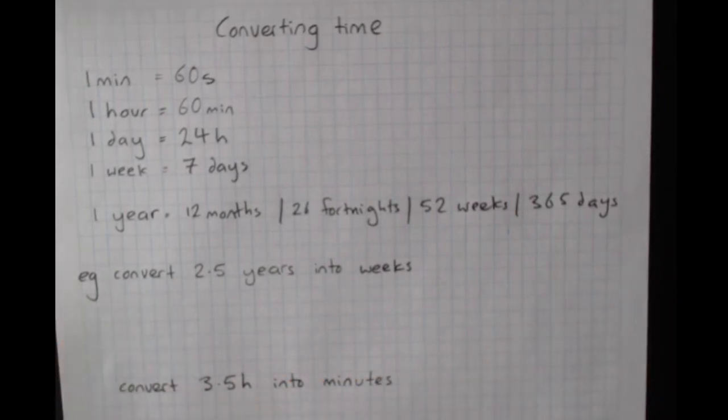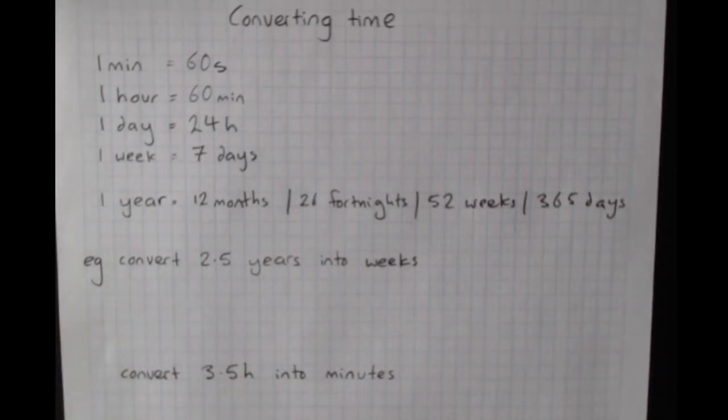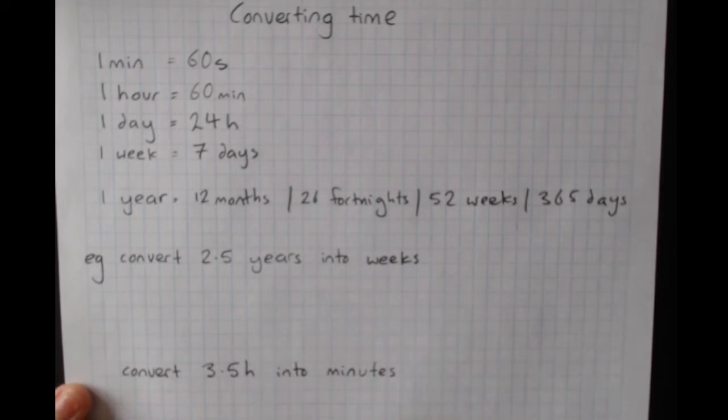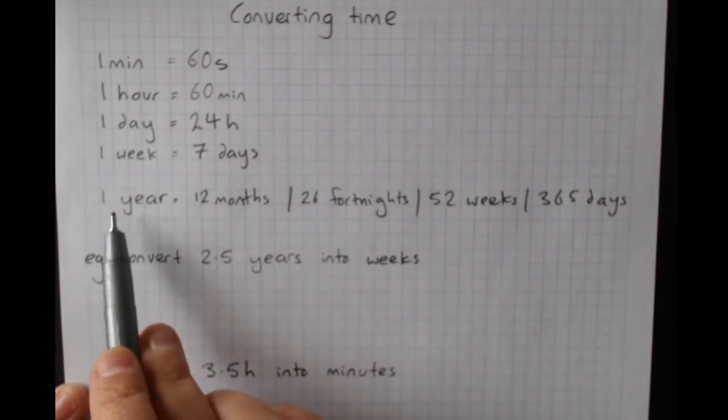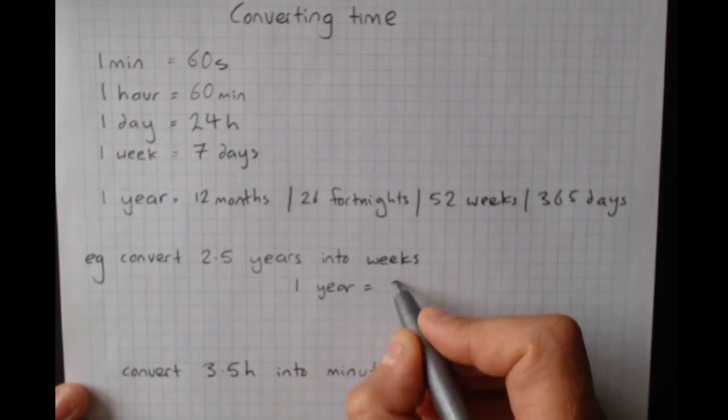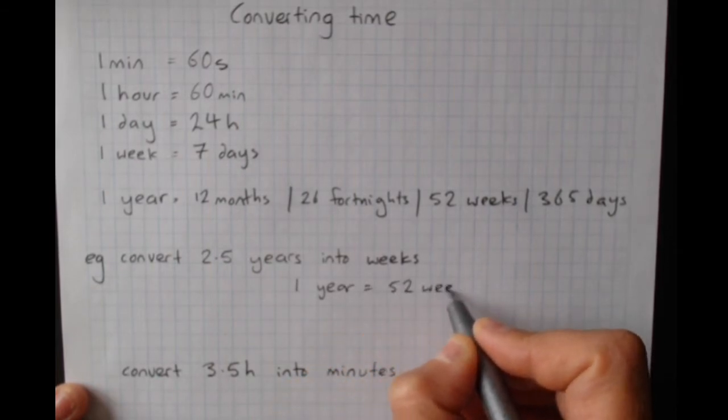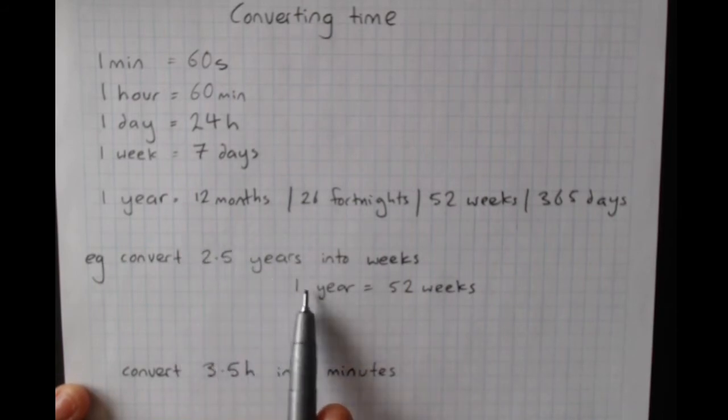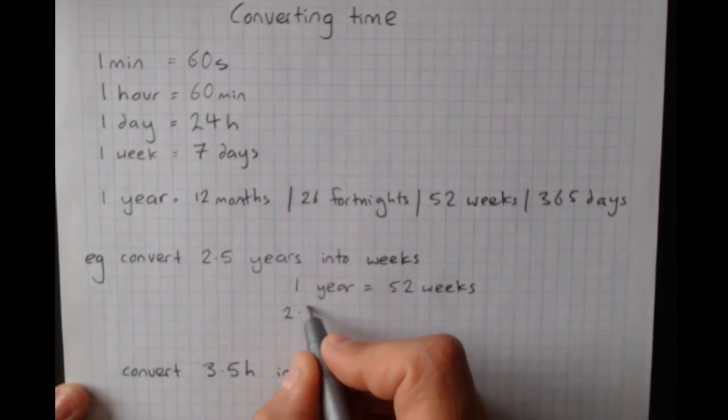So when we do our conversions, one of the easiest ways to do conversions is by starting with writing the rate of comparison between years and weeks. Convert 2.5 years into weeks. So we write a year is 52 weeks. Write the thing that we know, 2.5 years, under the same unit. So since I put years over here, I'm going to write 2.5 years over here.